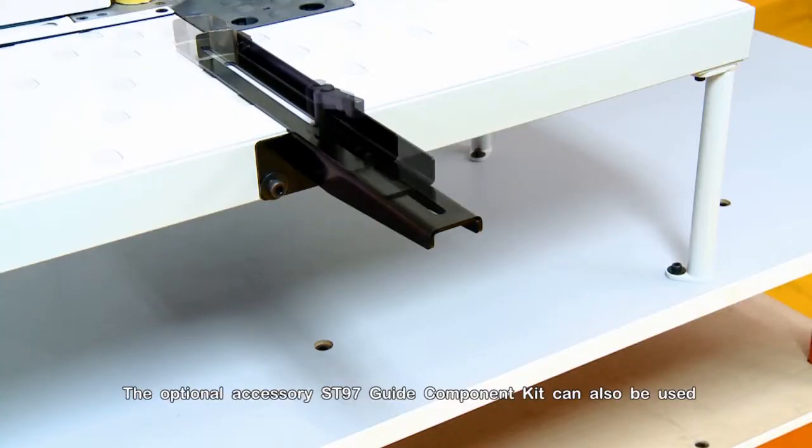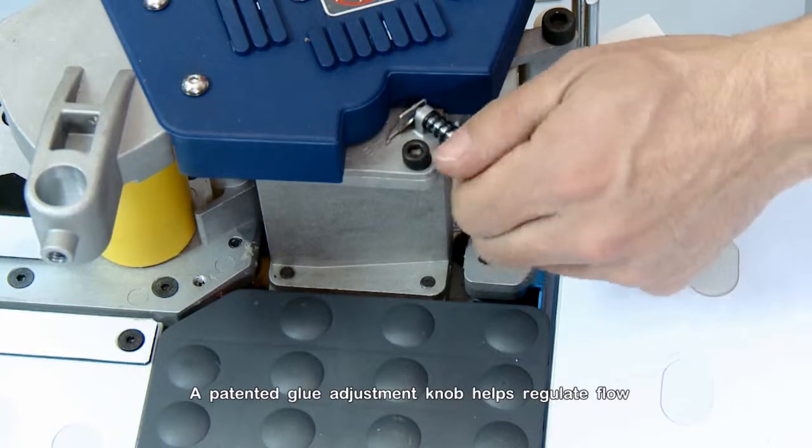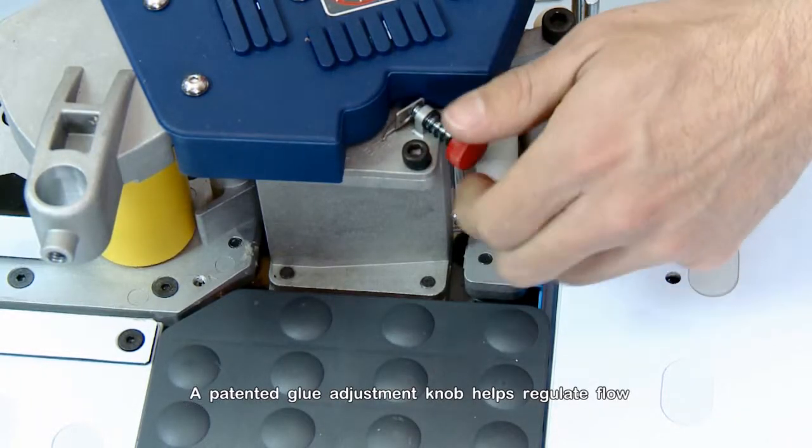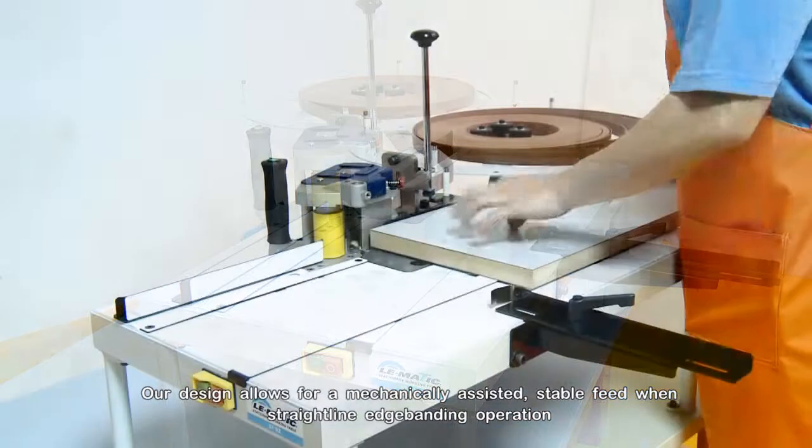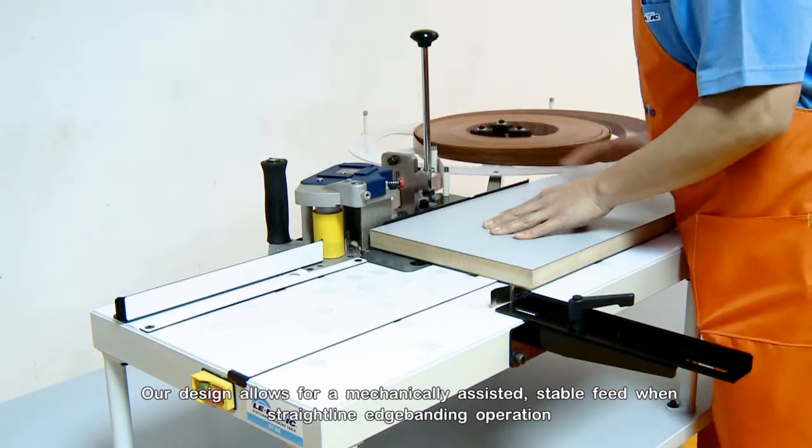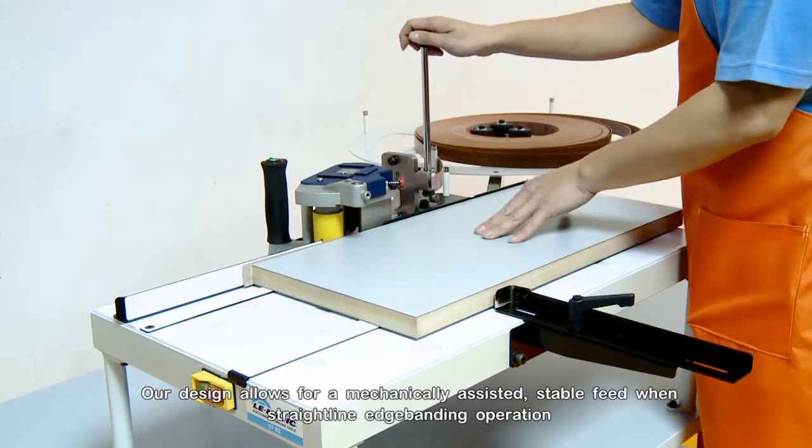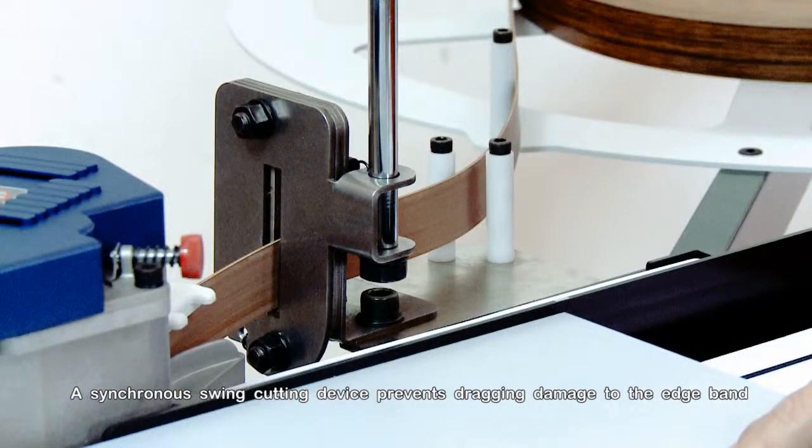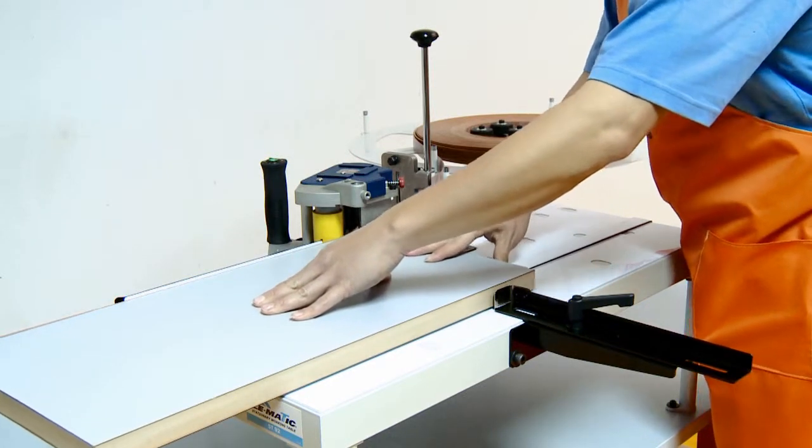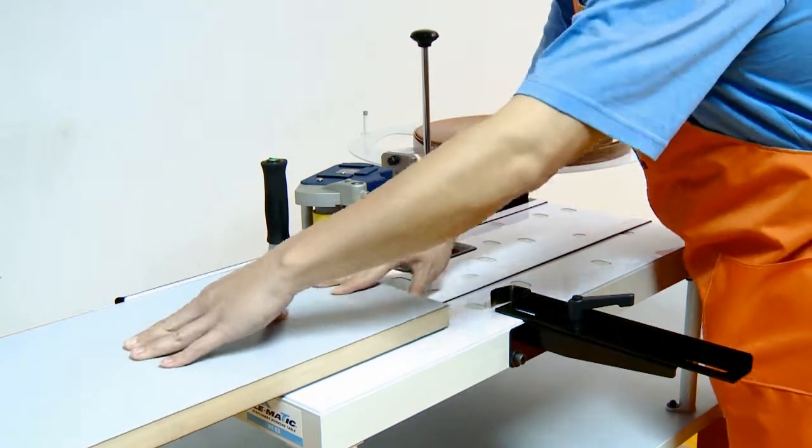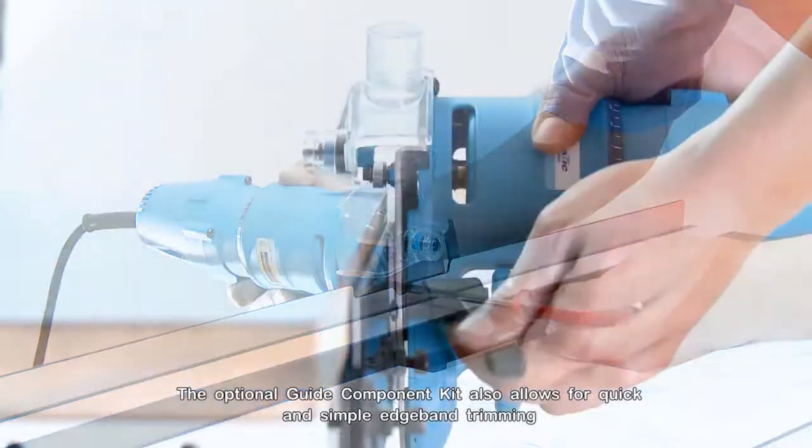The optional accessory ST-97 Guide Component Kit can also be used. A patented glue adjustment knob helps regulate flow. Our design allows for a mechanically assisted stable feed when straight line edge banding. A synchronous swing cutting device prevents dragging damage to the edge band. The optional guide component kit also allows for quick and simple edge band trimming.